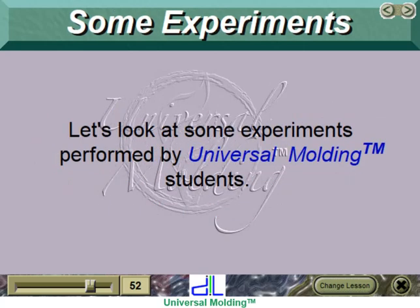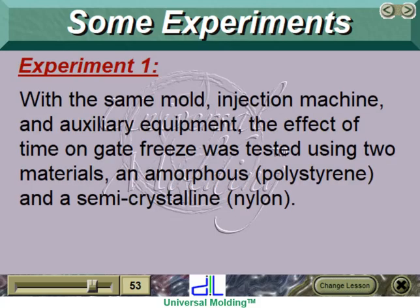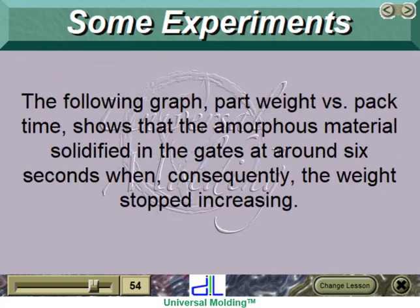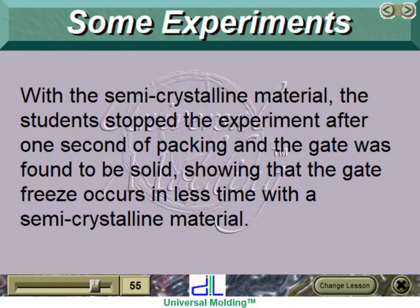Experiment 1: With the same mold, injection machine, and auxiliary equipment, the effect of time on gate freeze was tested using two materials — an amorphous (polystyrene) and a semicrystalline (nylon). The graph of part weight versus pack time shows that the amorphous material solidified in the gates at around 6 seconds, after which the weight stopped increasing. With the semicrystalline material, the students stopped the experiment after one second of packing and the gate was found to be solid, showing that gate freeze occurs in less time with the semicrystalline material.